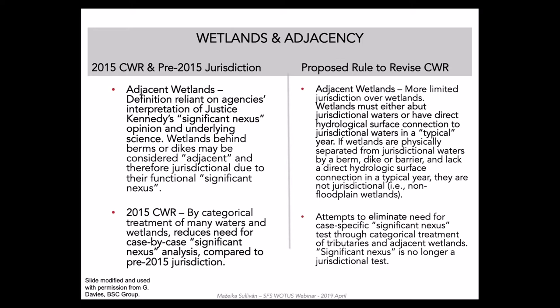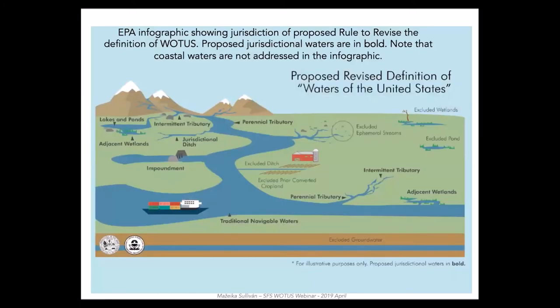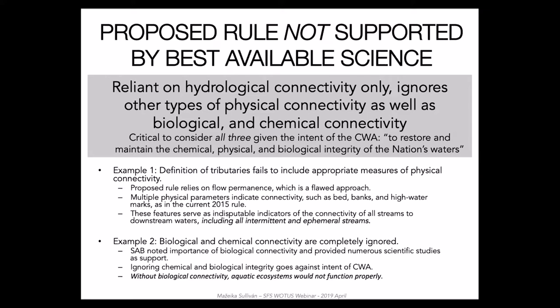Lakes and ponds are now in a separate category, and non-navigable isolated lakes and ponds would no longer be jurisdictional. Because fewer waters are jurisdictional overall, it is likely that fewer impoundments will be jurisdictional. One of the most significant changes is in the interpretation of the word 'adjacent.' The proposed rule changes the definition by excluding the significant nexus concept and the science supporting it. The agencies exclude three out of four dictionary definitions for 'adjacent' — next to, to lie near, and close to — thereby limiting the meaning to adjoining or abutting.